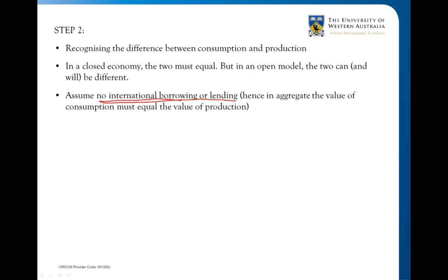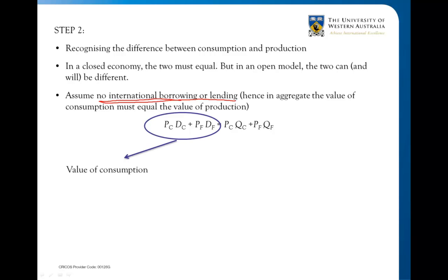Because of this assumption, we get the following expression. On the left-hand side — using D for consumption rather than C since we're using C for cloth — D_C is consumption of cloth and D_F is consumption of food. The price multiplied by consumption of cloth plus the price multiplied by consumption of food equals total value of consumption. On the right-hand side, Q represents production — what we're actually making, not necessarily consuming — so we have the value of production.